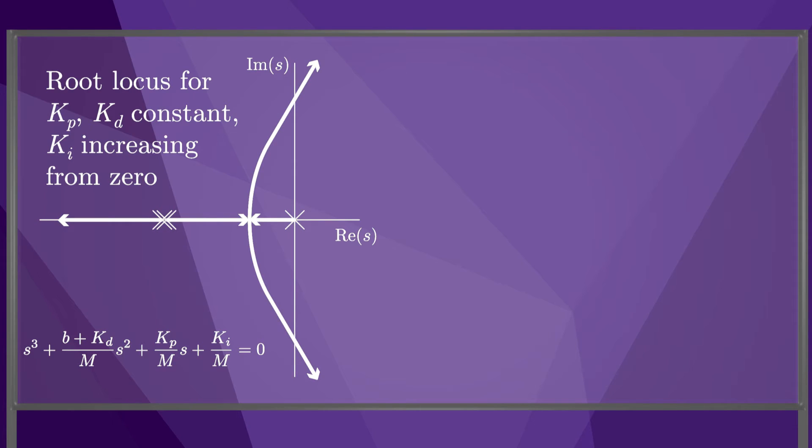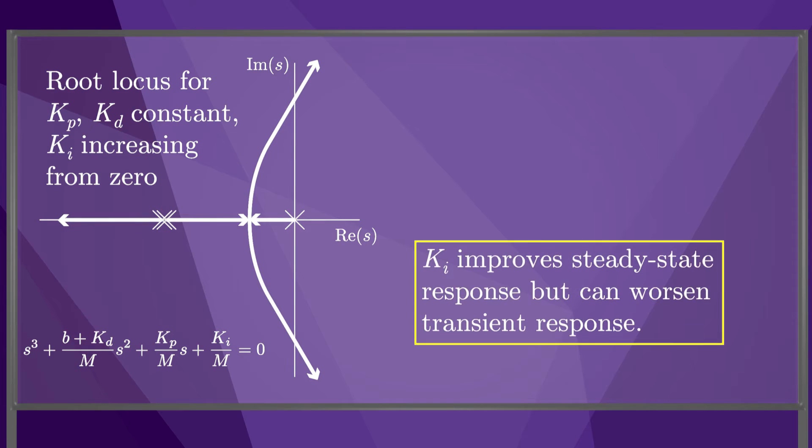We've drawn the root locus for KI increasing from zero, and it demonstrates the key features of adding integral control. The integral term can improve steady-state response, but it can worsen the transient response. In particular, adding an integral term could cause overshoot and oscillation, and in the worst case, instability.